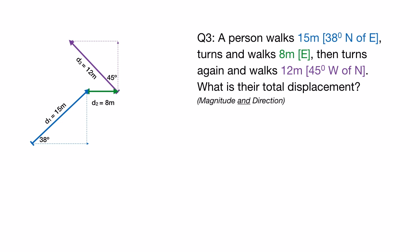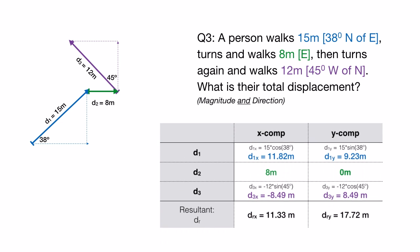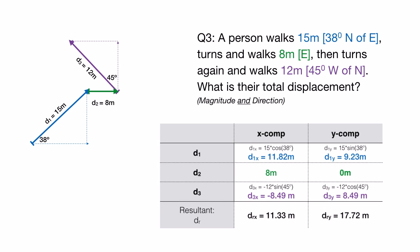We then need to use trigonometry to actually extract the x and y components out of these vectors. So for d1, for example, we're going to use the cosine of 38 degrees in order to extract the x component and we're going to use the sine of 38 degrees to extract the y component of it. I filled those in on the table.